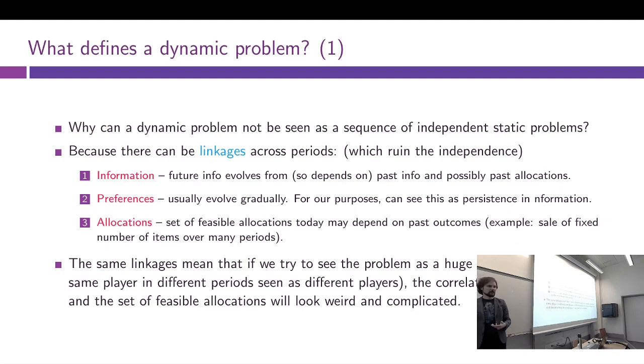The answer is there can be what I call linkages between different periods—meaning what connects today's problem to tomorrow's problem. Exactly as I told you, if you learn the buyer's preferences today, we can use this against the buyer tomorrow. This reflects linkage in information. Future private information of our players evolves from and therefore depends on the past information of those same players and possibly on the allocation to be implemented. The buyer's preferences may depend on whether they got to try the item or not. Actually, what I just said reflects linkages in preferences better than linkages in information. Preferences also usually evolve gradually—they depend on past preferences. Once we know buyers today, we know something about their future preferences, maybe not perfectly, but something. But the reason I confused the two is you can represent linkages in preferences as linkages in private information—what information I have about my own preferences is kind of the same as just my preferences in our interpretation.